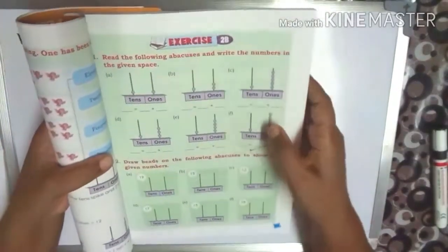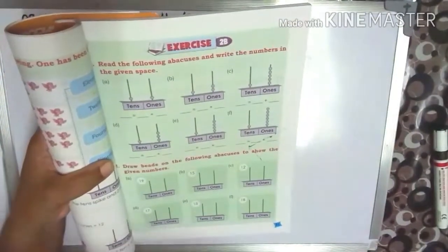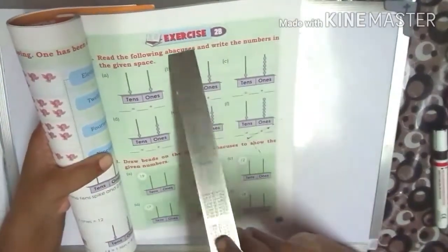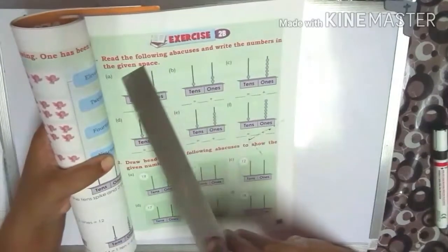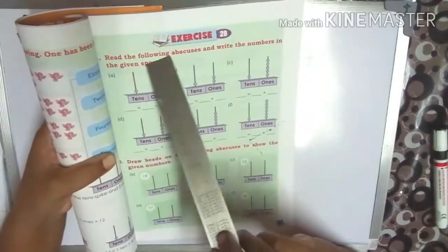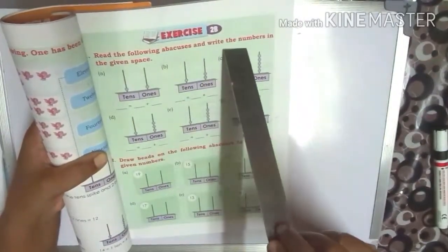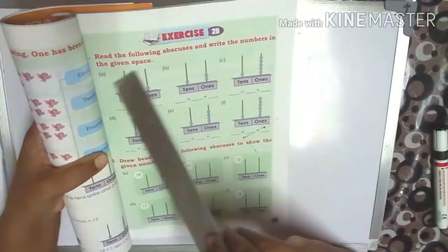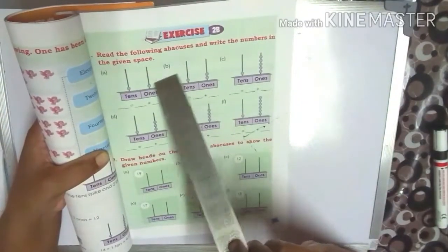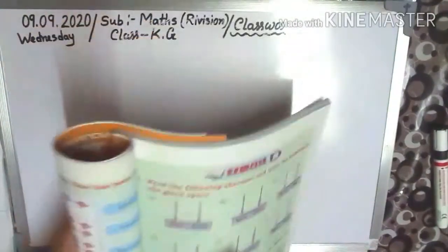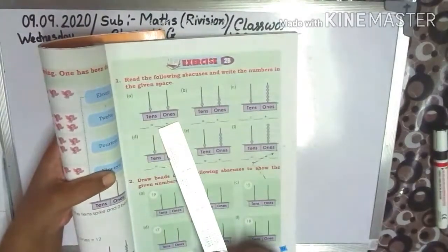See children, Exercise 2B: Read the following abacuses and write the numbers in the given space. See — 10s and 1s.